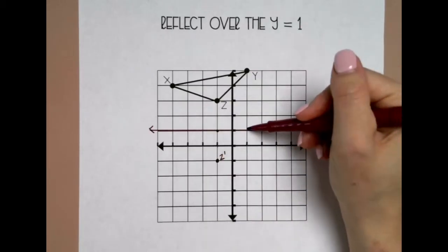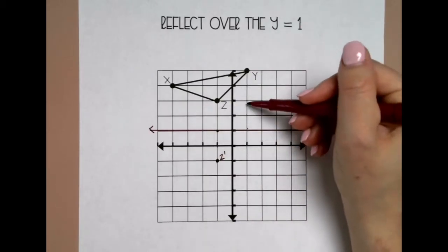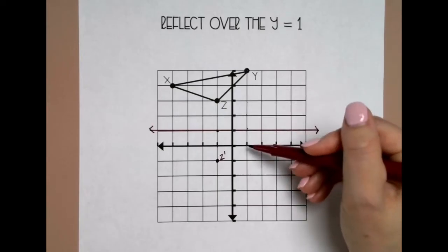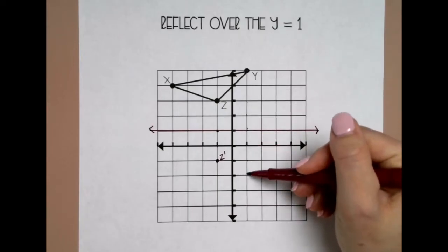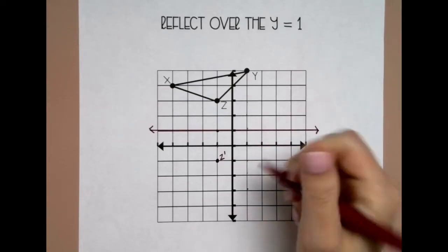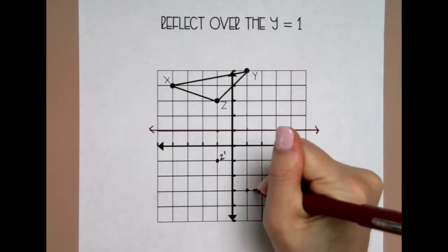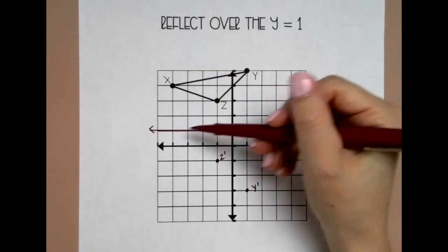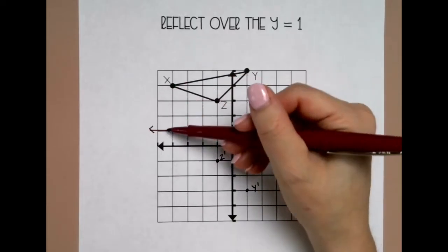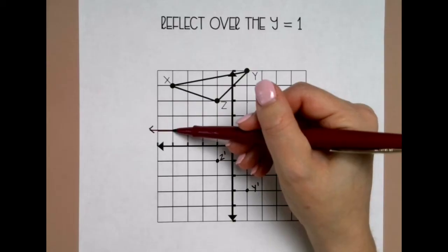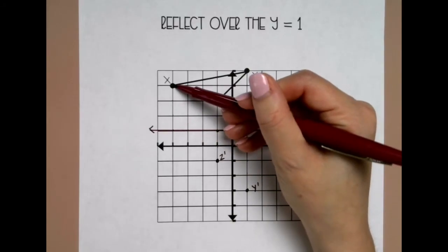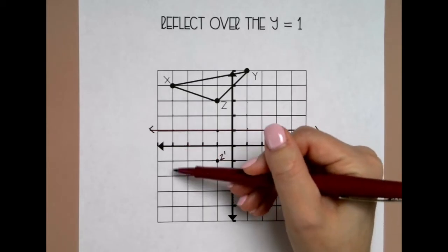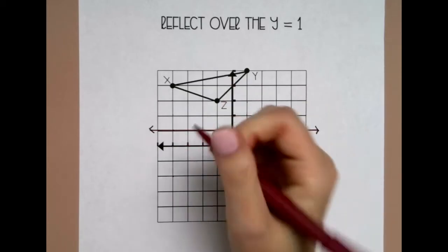Then I'm going to go to Y. Y is 1, 2, 3, 4 up, so I'm going to go 1, 2, 3, 4 down. Remember, our reflection is a mirror image, so you want to go the same distance but just the opposite direction. X is 1, 2, 3 up, so I'm going to go 1, 2, 3 down.